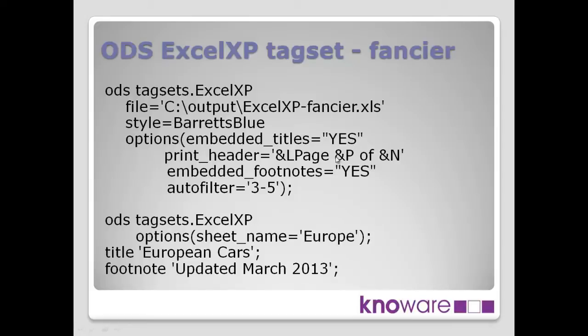The next one down is the print header — this controls the print header part of the Excel spreadsheet, specifying what you want when you print it, such as saying page 1 of 10. The next one says we want the footnotes included. And the last one here is auto filter — often people want Excel spreadsheets with filters on the columns, and that's what we're doing here, telling it to put filters on columns 3, 4, and 5.